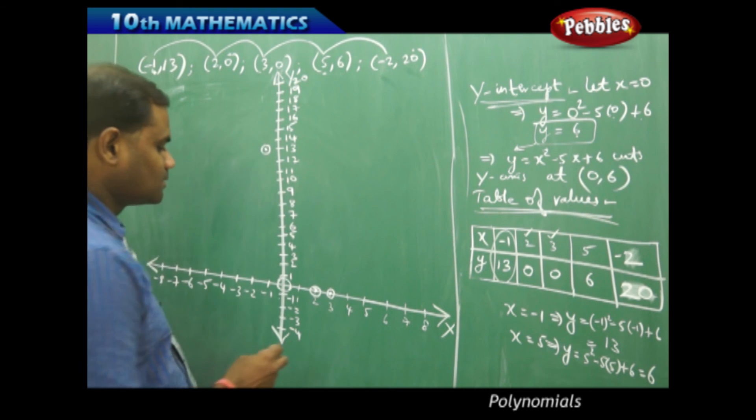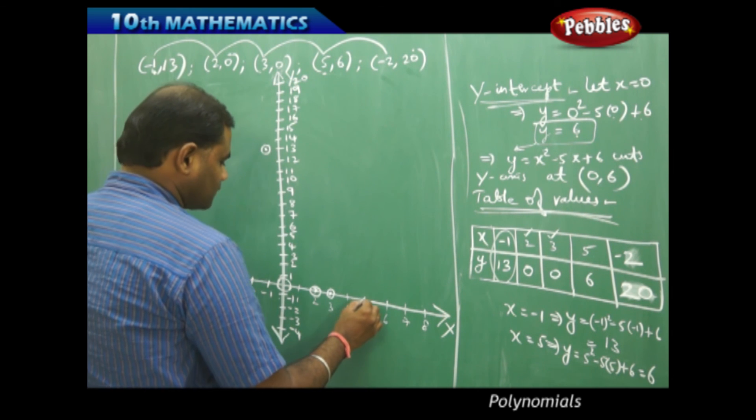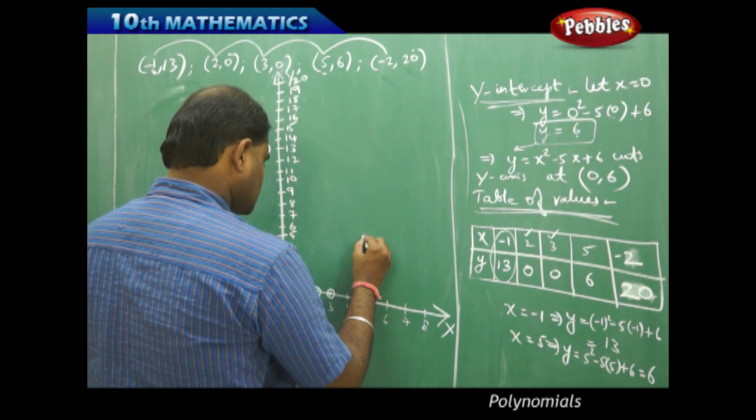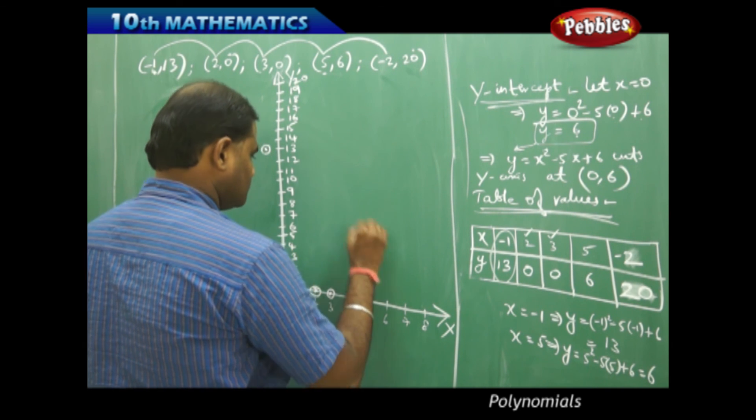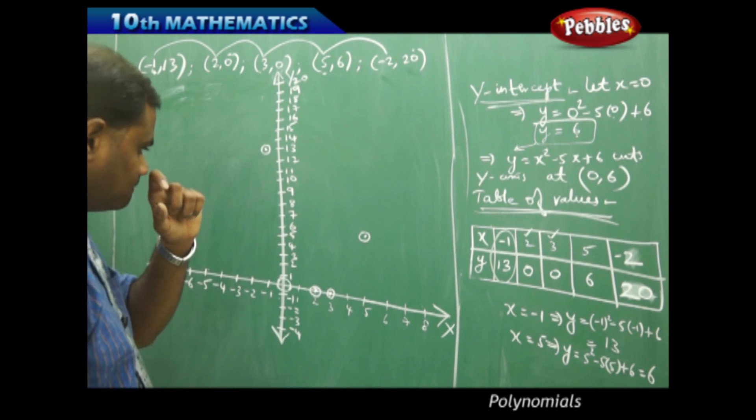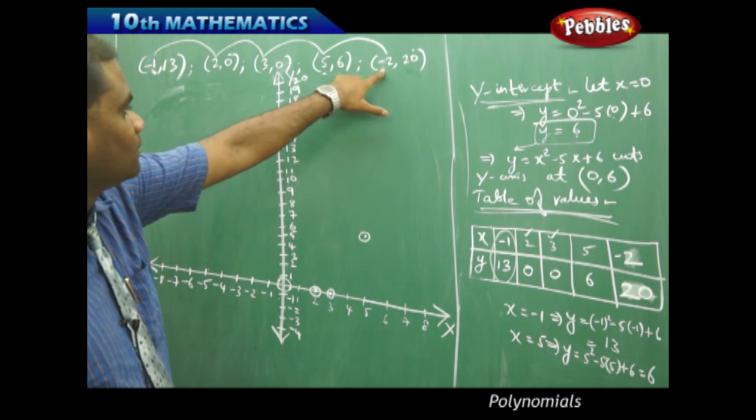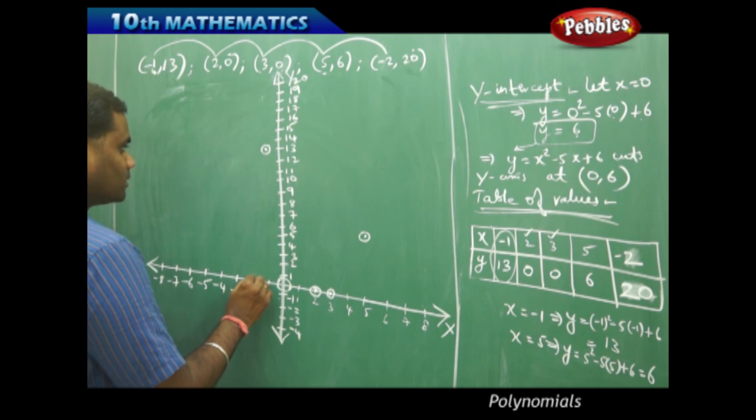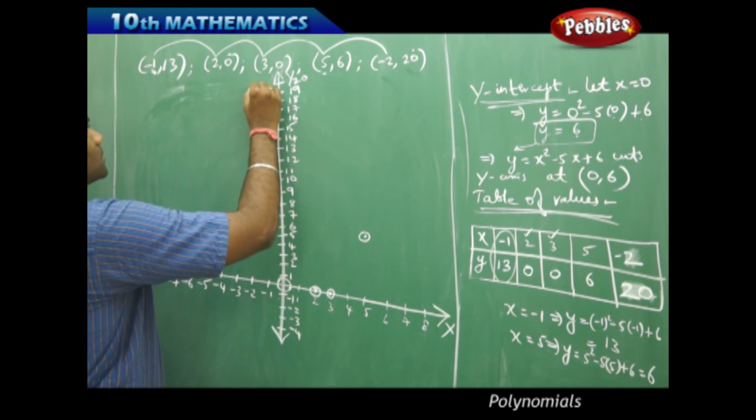Now, I have 5 and 6, therefore my x equal to 5 and y equal to 6 is somewhere here. Then, similarly, I have for negative 2, this is 20, which comes somewhere here.